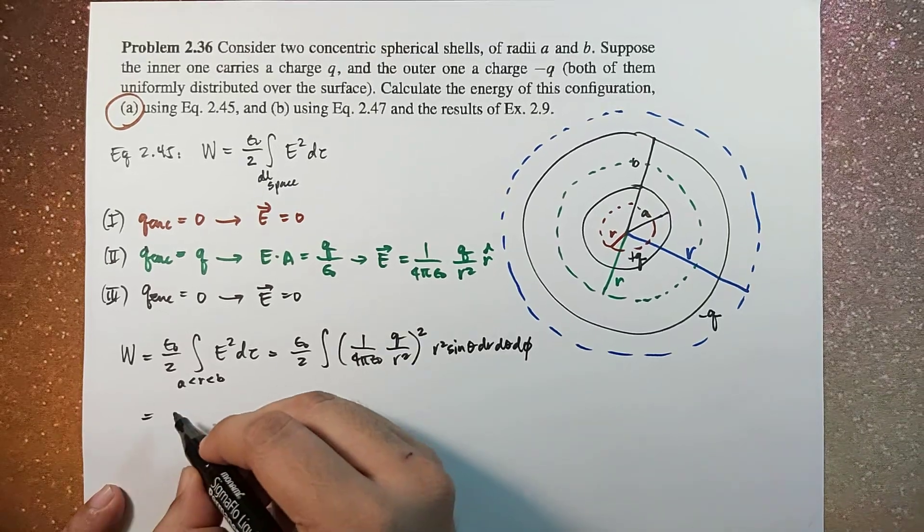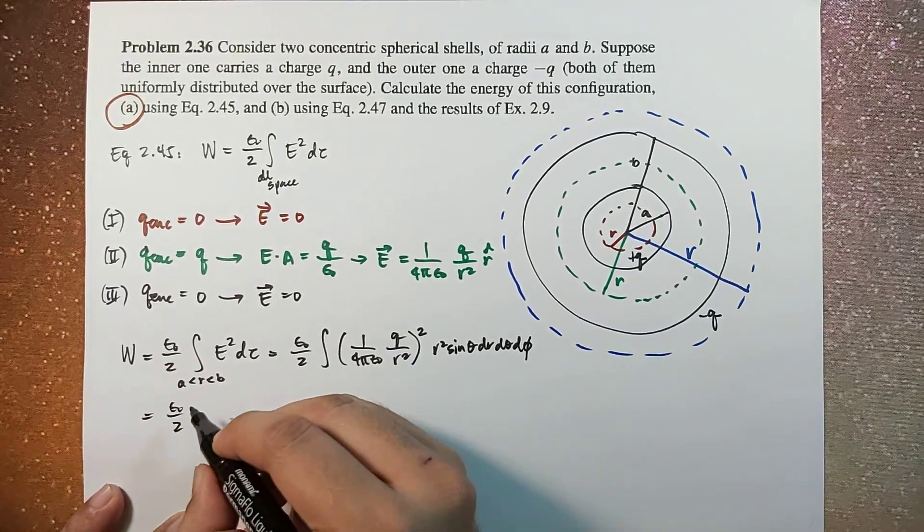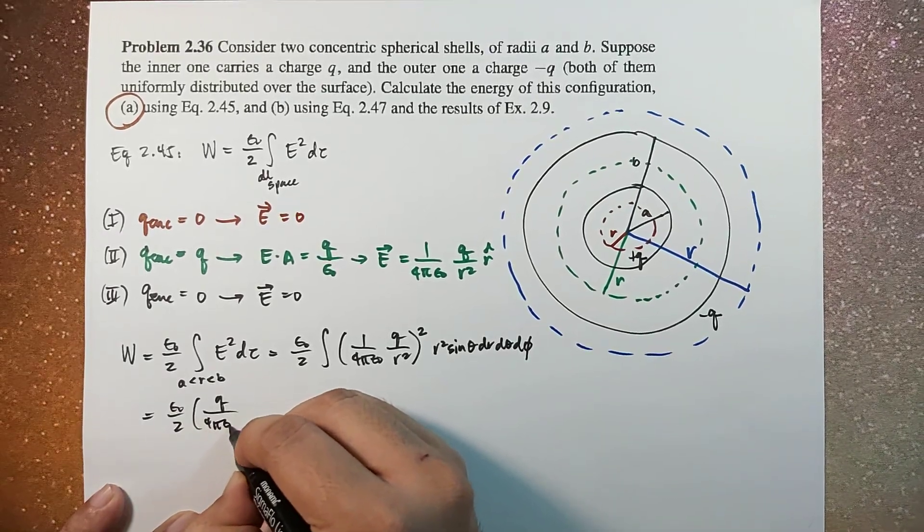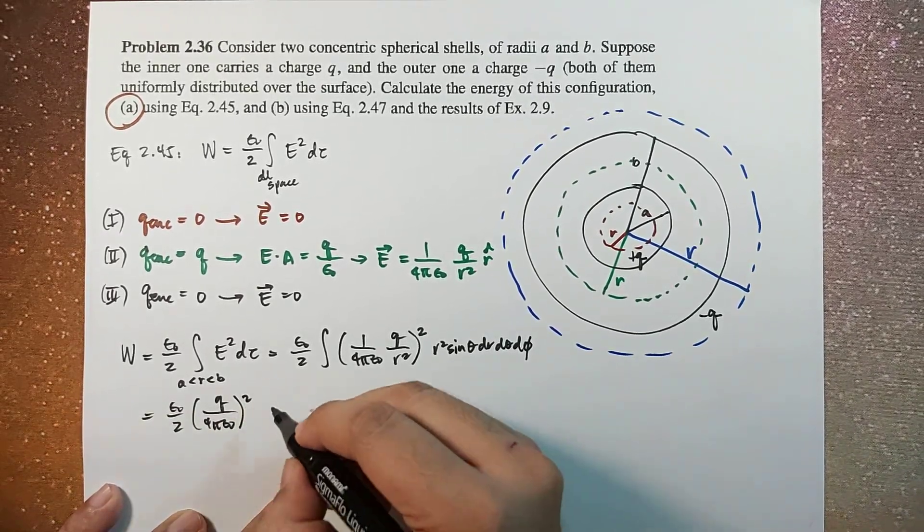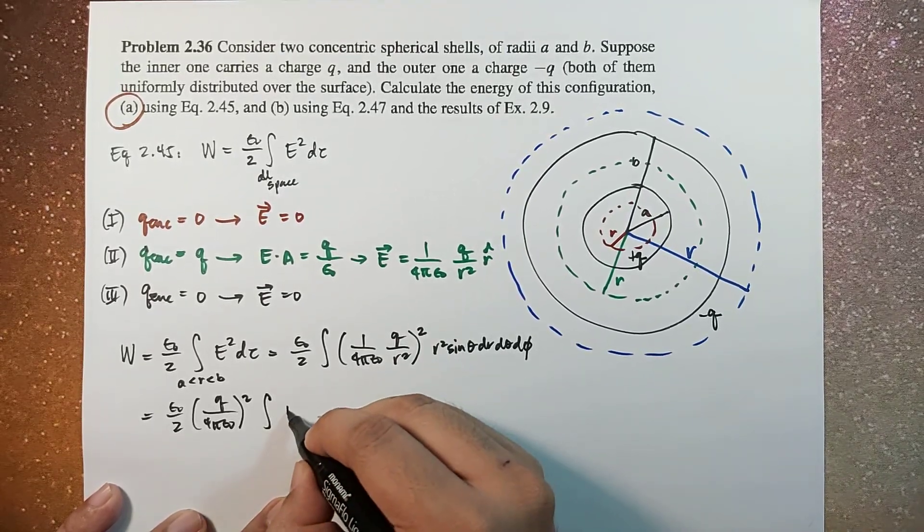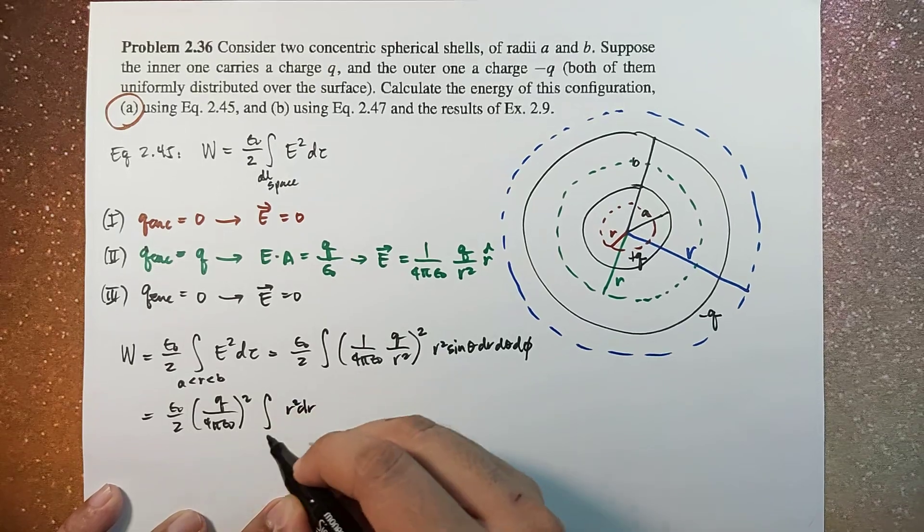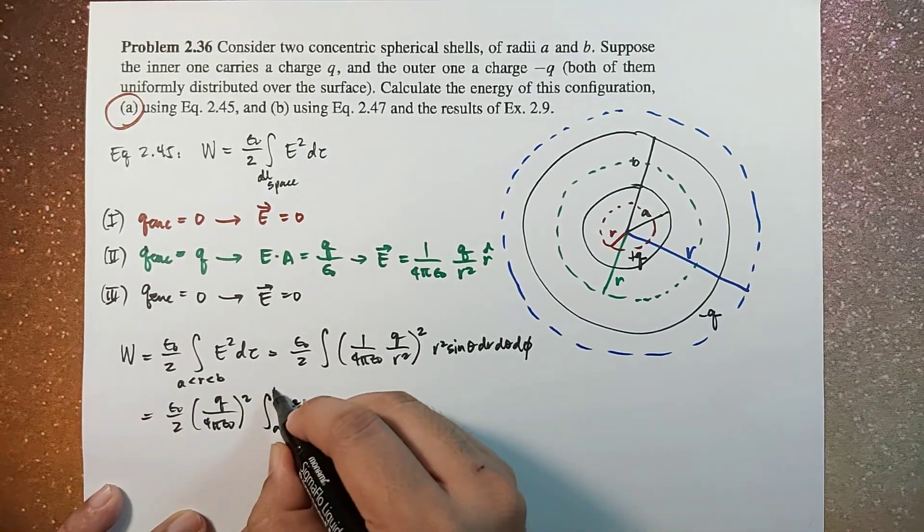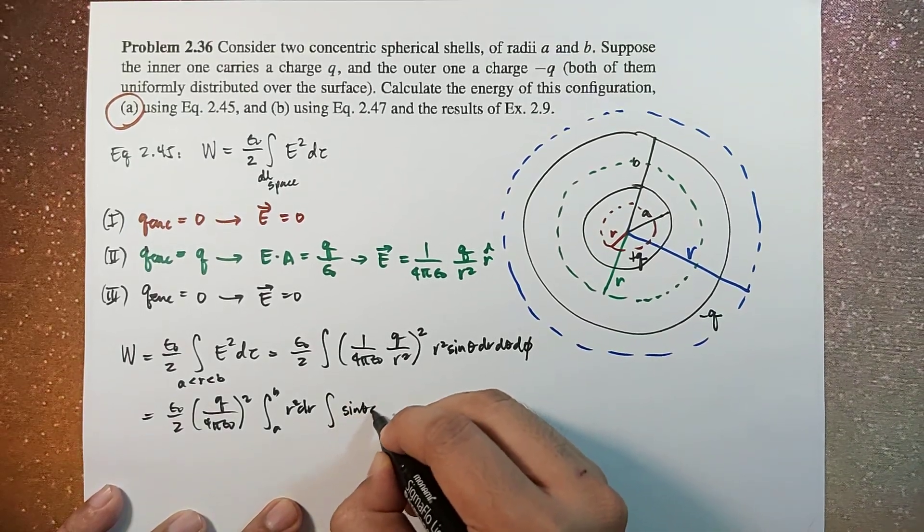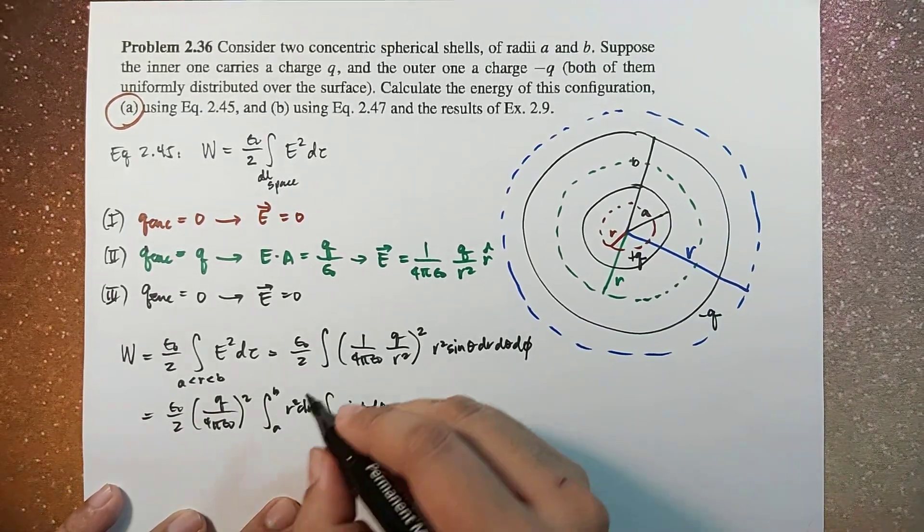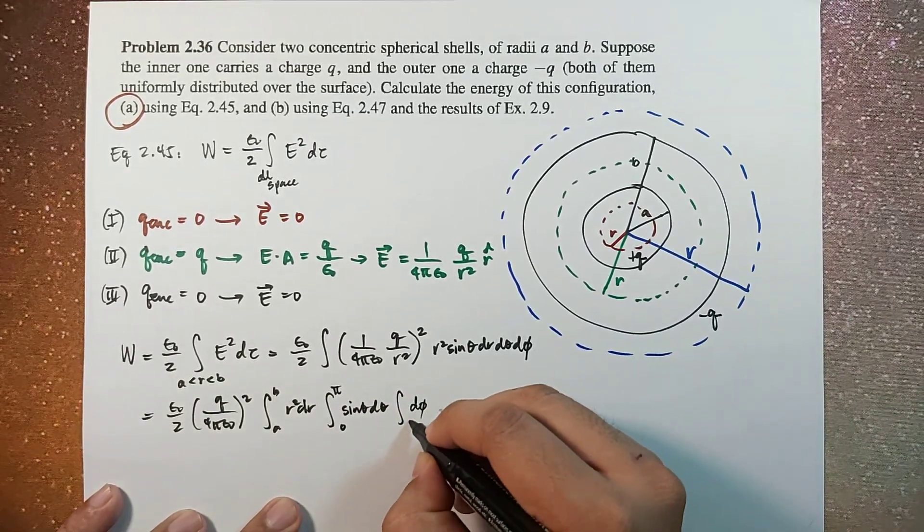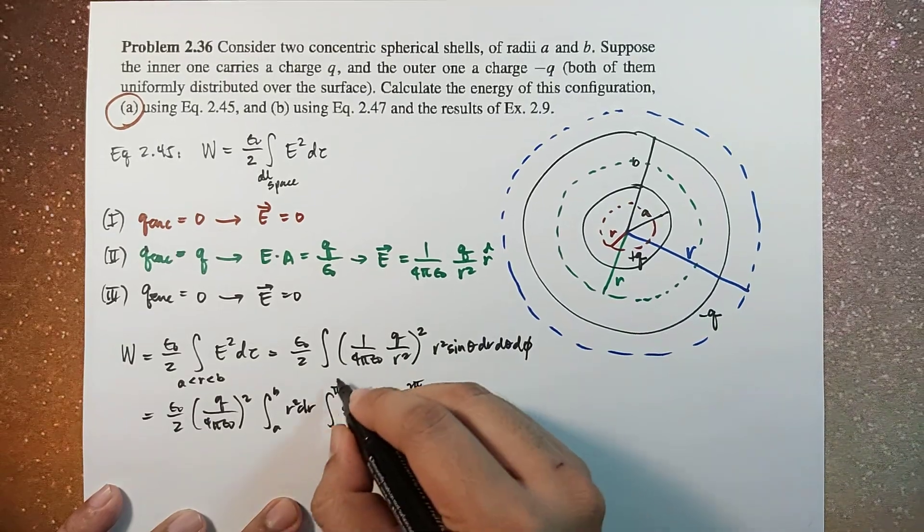So simplifying this, we now have epsilon naught over 2 times Q over 4 pi epsilon naught squared times the integral of R squared dr evaluated from A to B, then integral of sin theta d theta evaluated from 0 to pi, and then d phi, integral of d phi evaluated from 0 to 2 pi.